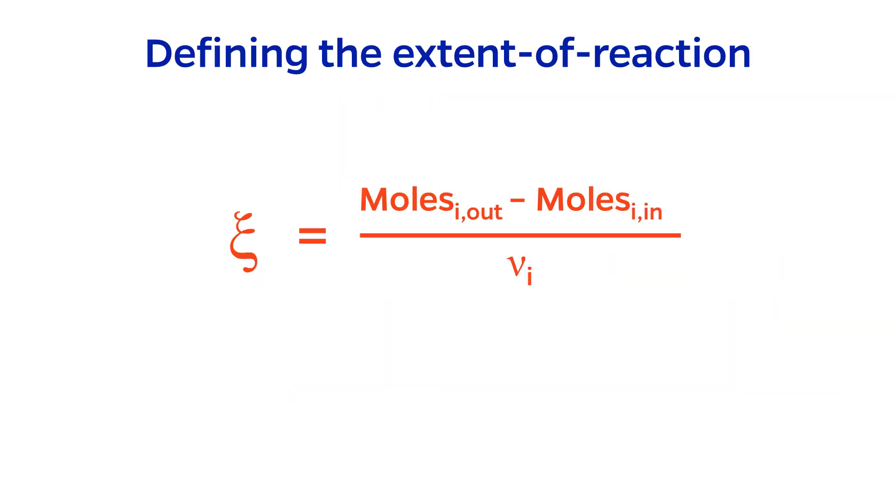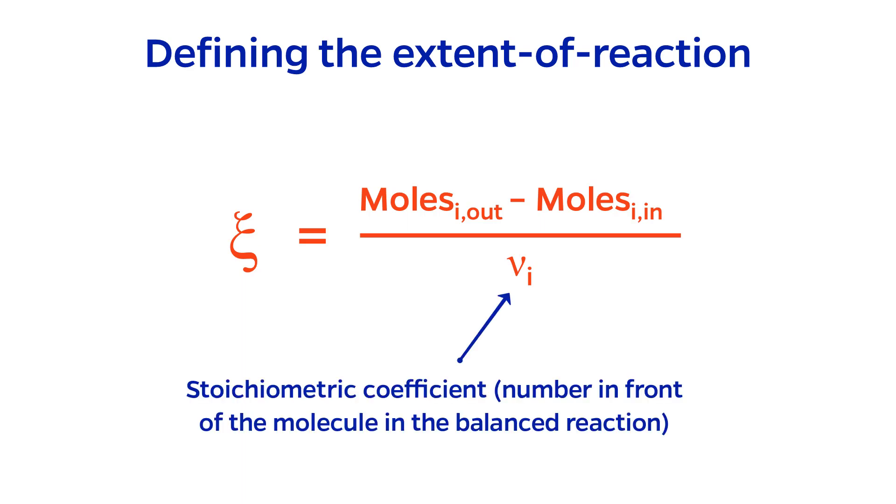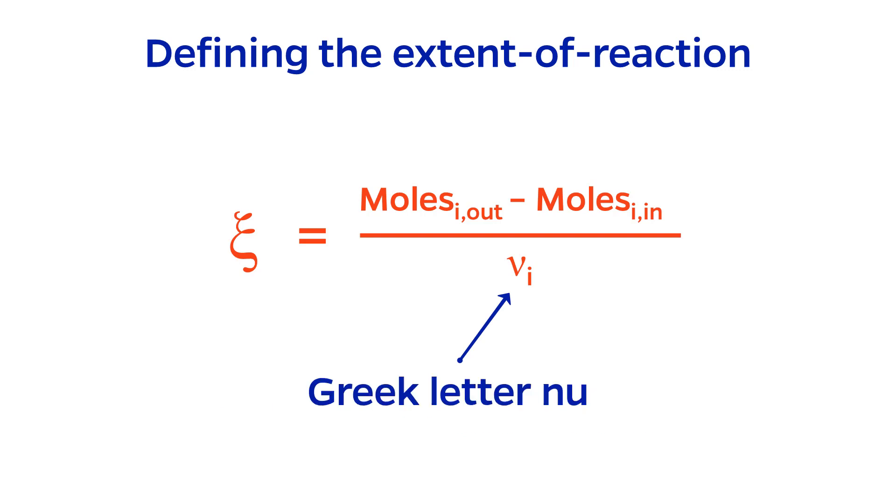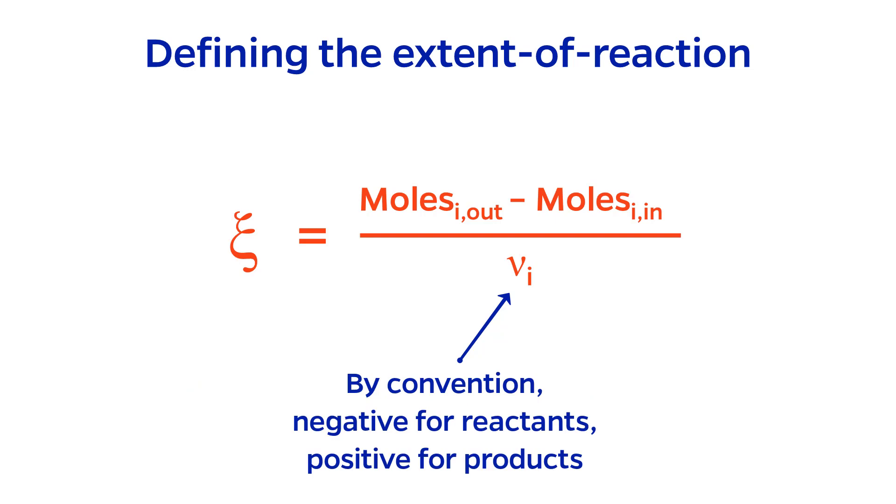The extent of reaction is defined as the moles of species I out minus the moles of species I in divided by the stoichiometric coefficient of species I, here represented by the Greek letter nu. Note that by convention the stoichiometric coefficient is negative for reactants and positive for products.